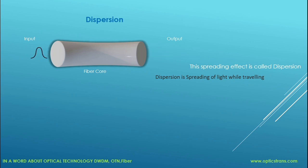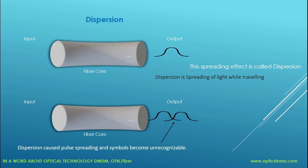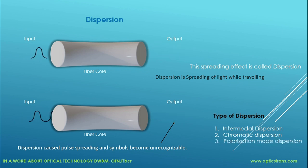So dispersion is the spreading of light while traveling. Let's take another example — imagine we launched two symbols into a fiber; dispersion caused pulse spreading and the symbols are overlapped. There are three types of dispersion: intermodal dispersion, chromatic dispersion, and polarization mode dispersion.